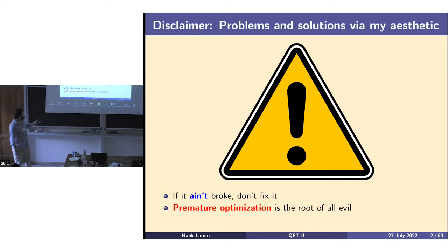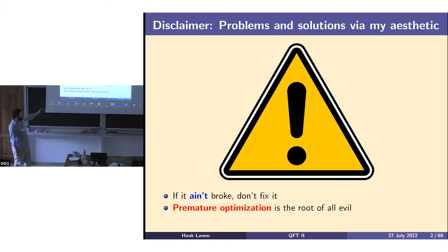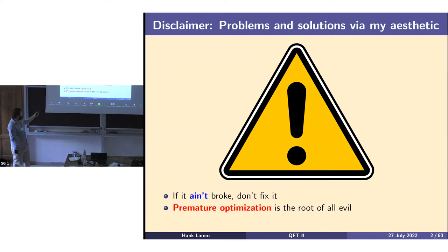The second thing I want to warn you about is that premature optimization is the root of all evil. If you start trying to solve the problem in the most optimized way before you've even written down any idea of how to do it, you're going to have a bad time. This extends from coming up with ansatze for variational methods to finding the right way to digitize a gluon field and put it onto a quantum computer.